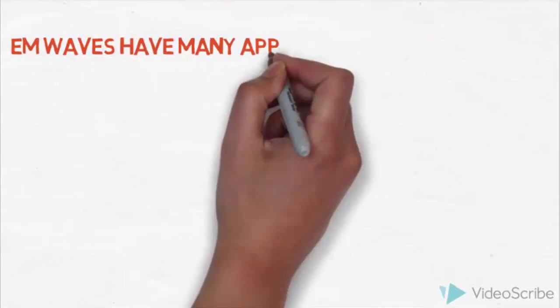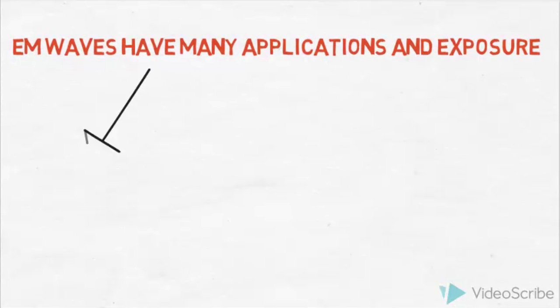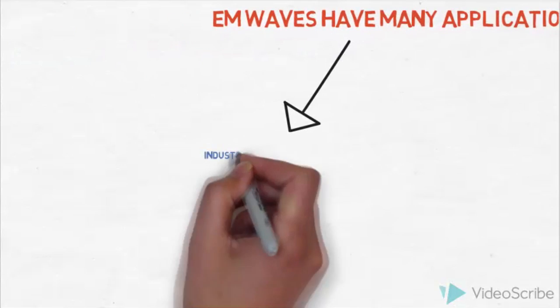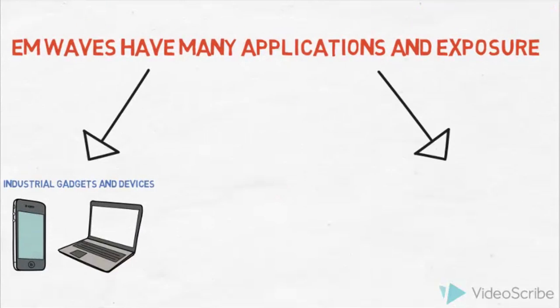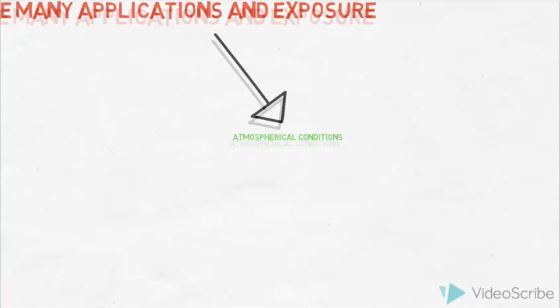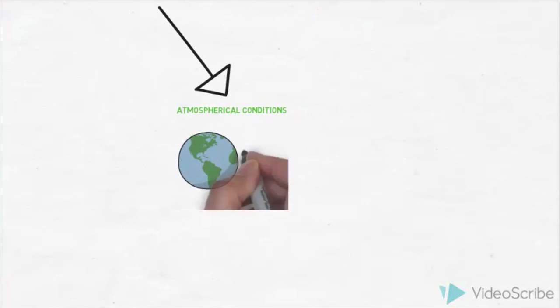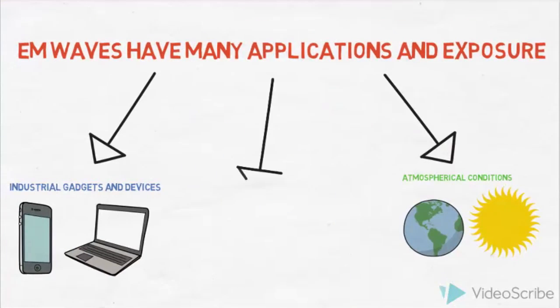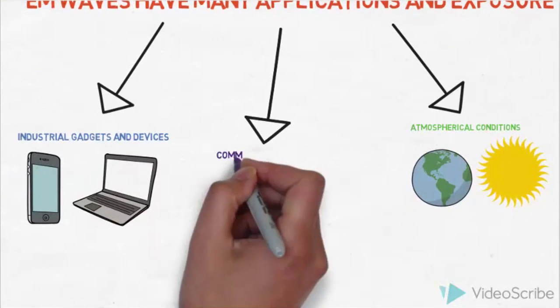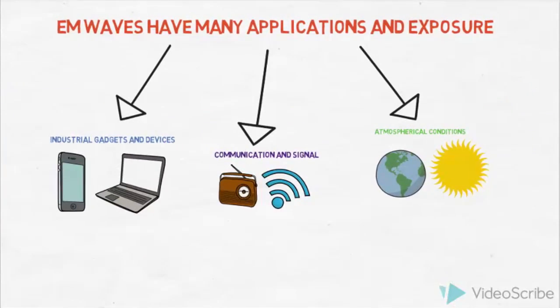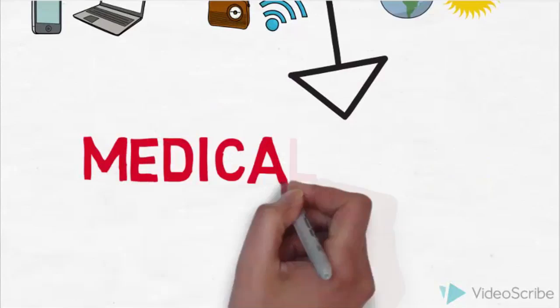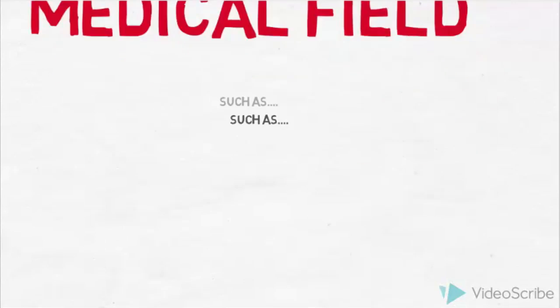EM waves have many applications and means of exposure. They are found in industrial gadgets and devices such as our daily phones and computers. They are found in atmospheric conditions like the rays emitted from our sun, communication and signal like radio channels and internet Wi-Fi. And for today's focus, medicine.